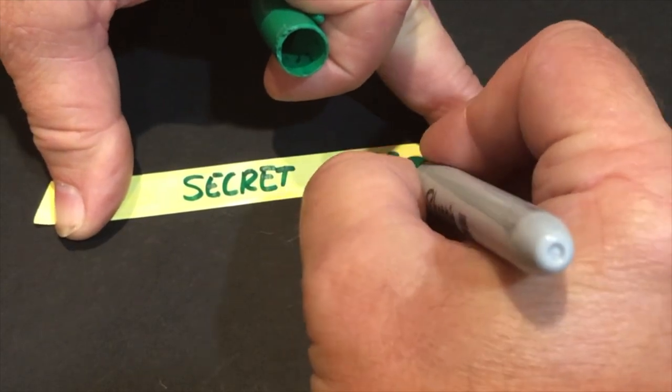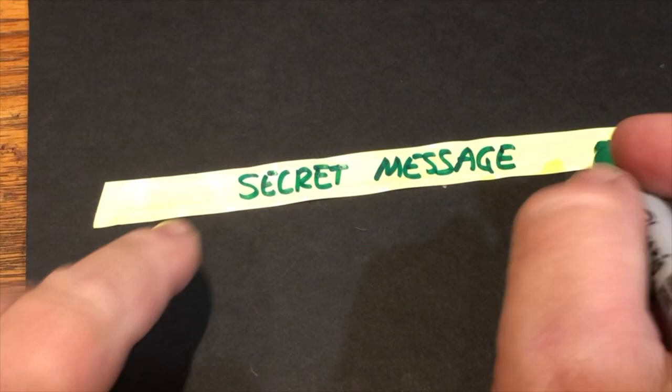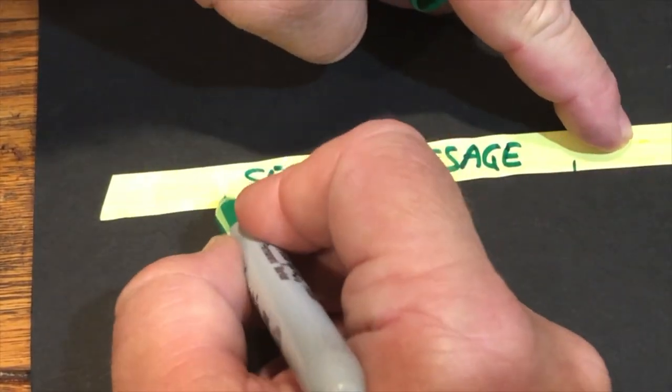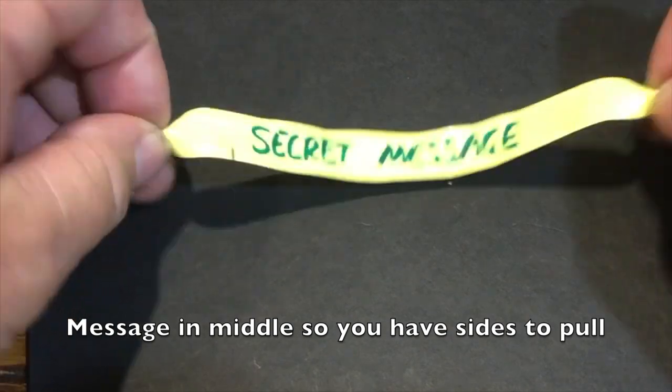When you write your message with your Sharpie, make sure it dries, because we're going to be pulling the ends. And make sure there's enough side to the left and right, as I'm drawing those lines, where you could actually pull out to show your secret message.